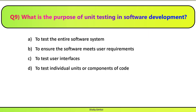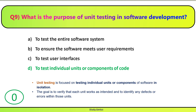Question 9. What is the purpose of unit testing in software development? Unit testing ka kya purpose hai software development mein? Correct answer is D. Unit testing is focused on testing individual units or components of software in isolation. The goal is to verify that each unit works as intended and to identify any defects or errors within those units.